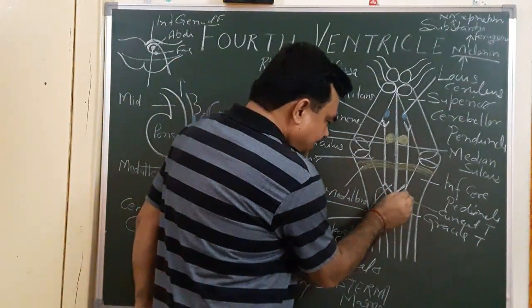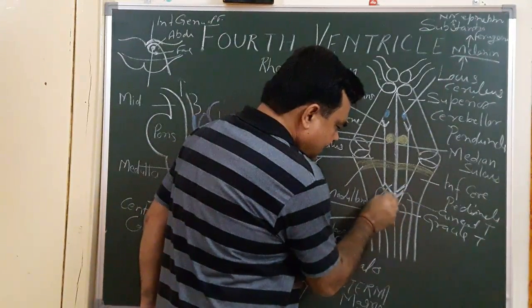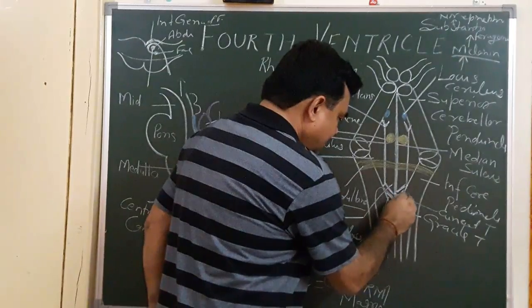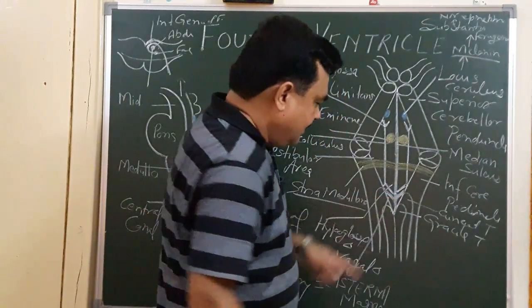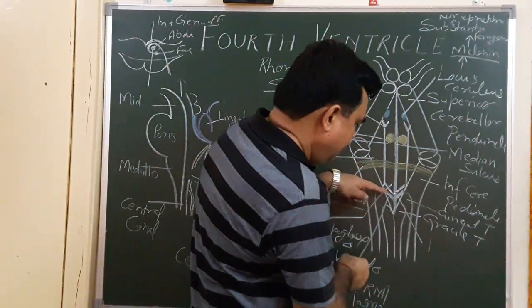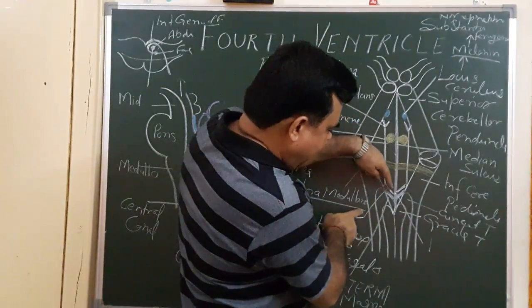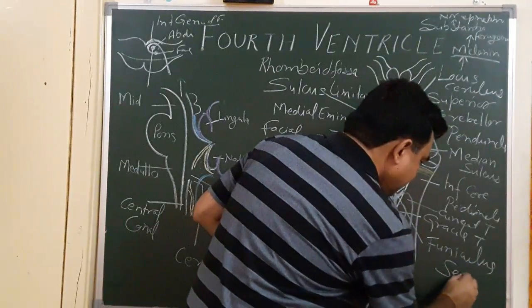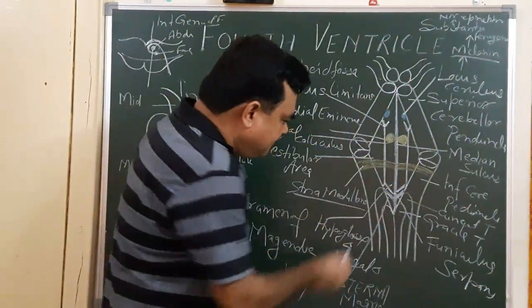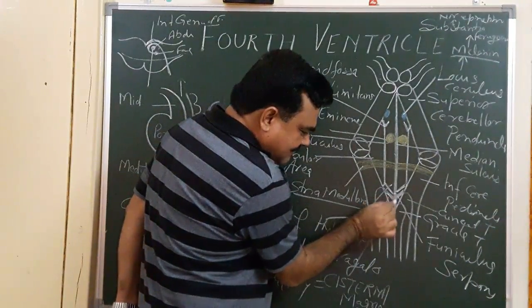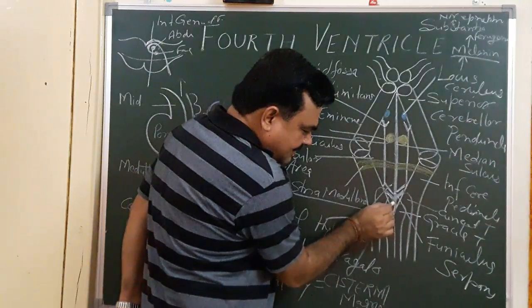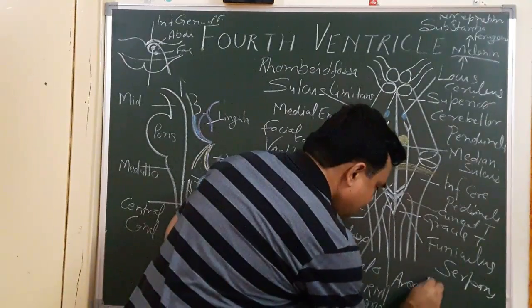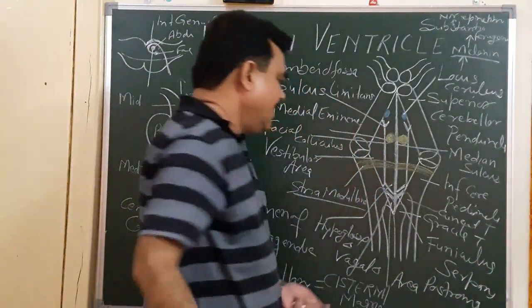There is also the funiculus separans, which lies between certain boundaries. Just below the funiculus separans, between the funiculus separans and the gracile tubercle, there is an area known as the area postrema.